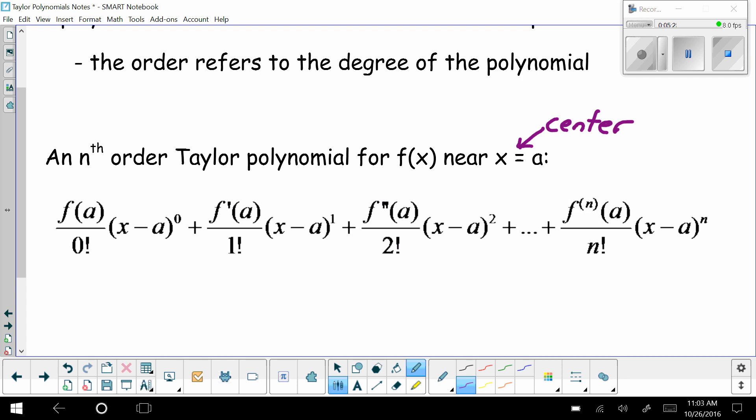So the way we do this is I'm going to take the function value of a divided by 0 factorial. Just in case you forget, 0 factorial is defined to equal 1. And I'm taking that quotient times x minus a to the 0 power. Then I'm going to do the first derivative with a plugged in over 1 factorial times x minus a to the 1st power. Plus the second derivative with a plugged in over 2 factorial times x minus a to the 2nd power.